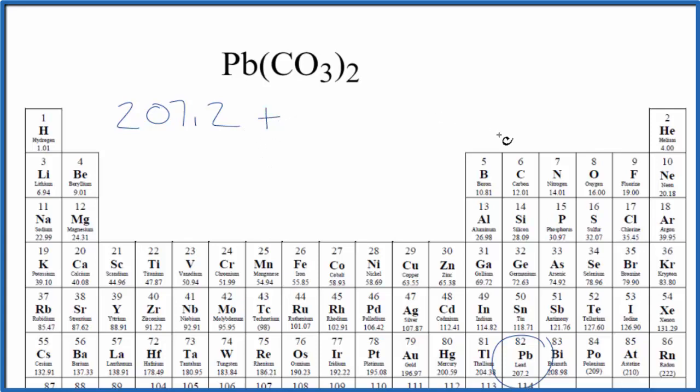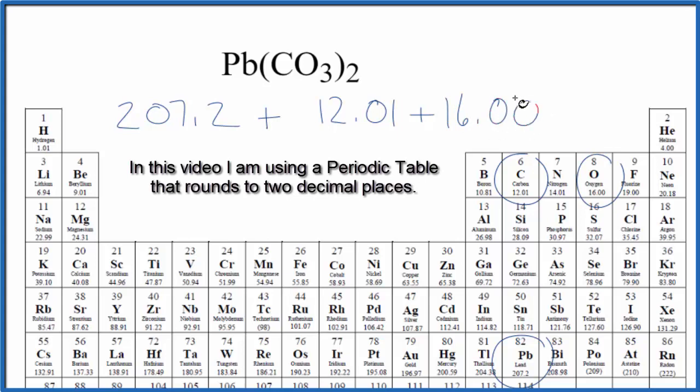Plus we have carbon here, which is 12.01 grams per mole, and then we have oxygen, 16.00 grams per mole, but we have three oxygen atoms. We're going to multiply that by three.